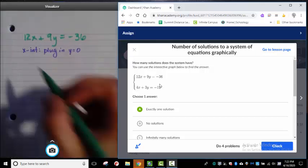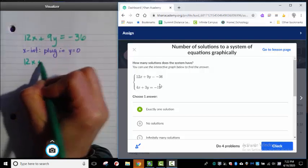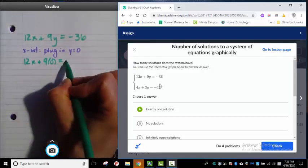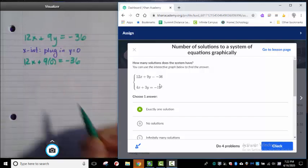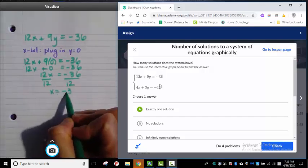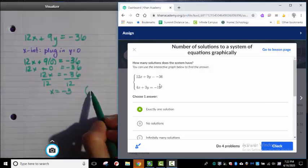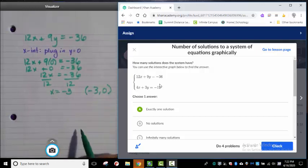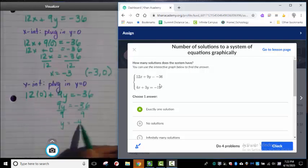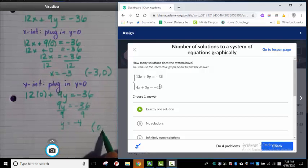I'm going to do 12x plus 9 times 0 equals negative 36. And then solve for the x. So my x intercept, negative 3, 0. That's one of the points that I can plot. For my y intercept, I'm going to plug in 0 for x. So my y intercept is 0, negative 4.